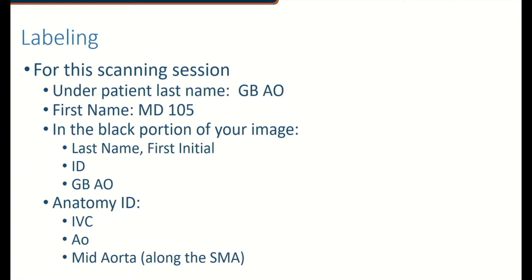For labeling, in your patient tab, you're going to label gallbladder or aorta, and then your course. On the image itself, in the black portions that don't have image on them, you're going to include your last name, your ID, and again an anatomic identifier. Additionally, for this lab if it were an active scanning lab, we'd be identifying IVC and aorta, and for aorta we'd be measuring it.